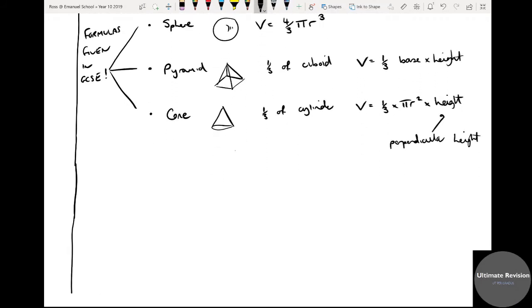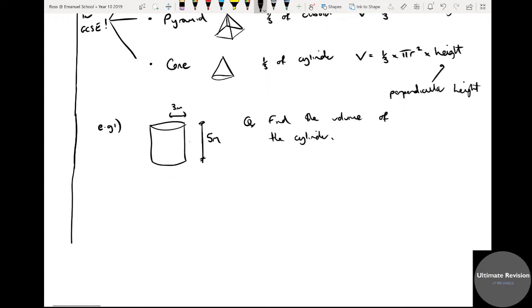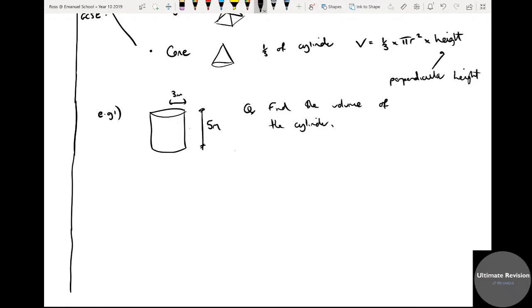Right, we're going to look at a few examples now. So EG1, start off with a nice easy one. Imagine I've got a cylinder. Okay, let's say the height of the cylinder is 5 meters and the radius is 3 meters. The question might be, find the volume of the cylinder. Find the volume of the cylinder. Right, I'm going to give you a little, have a go, have a think about that in a second.